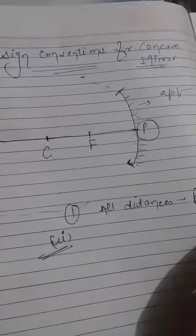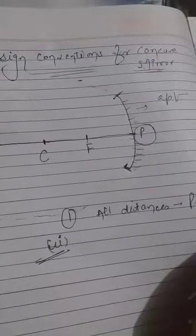The second one. Distances measured in the same direction as that of incident light are taken as positive. What does it mean?